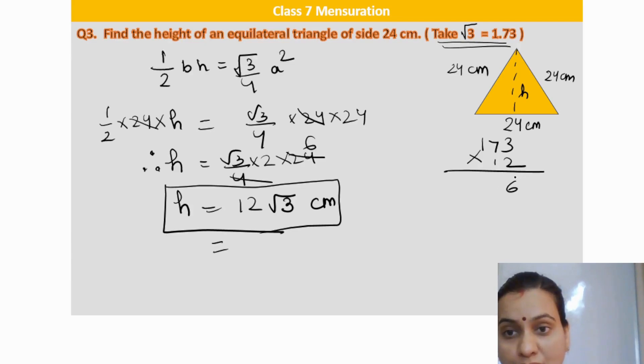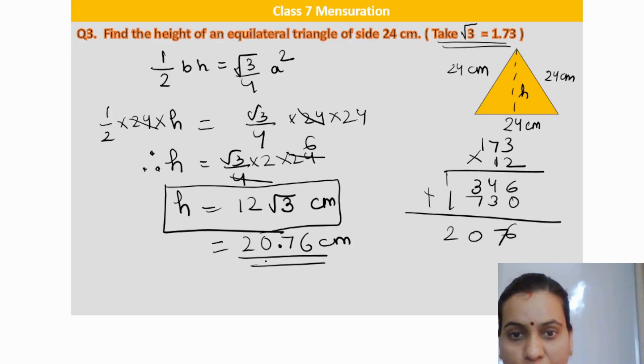2 threes are 6, 2 sevens are 14, 2 ones are 2 plus carried over 1 is 3. Then 3 times 7 is 21. 6 add, 7, this becomes 10, 1 carried over, so it is 2076. Decimal point here. So the value of height is 20.76 centimeter.